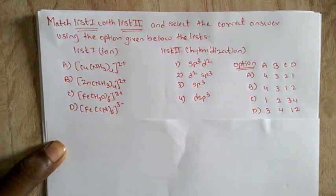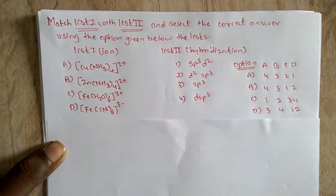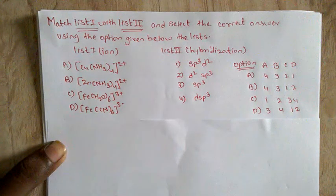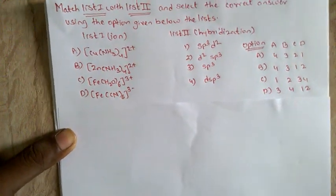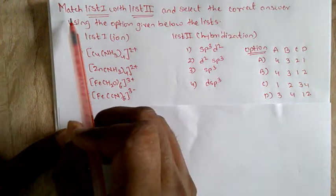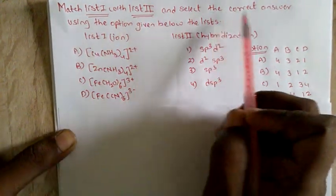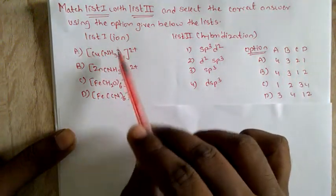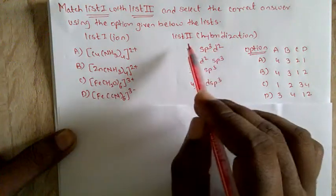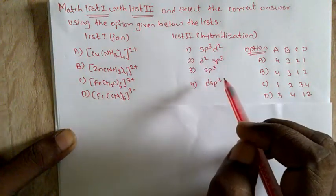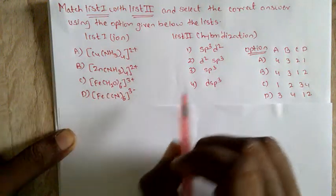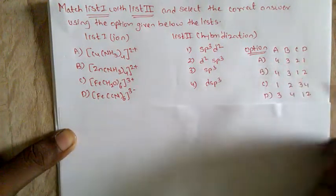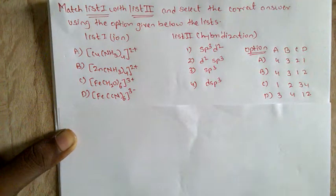Hello guys. Today we are going to solve a question of inorganic chemistry on hybridization of transition state elements or complexes. The question is to match list one with list two and select the correct answer. List one contains complex ions and list two contains hybridization. We have to find the hybridization of each complex, match them, and select the correct option.